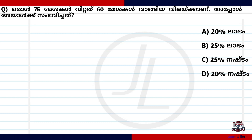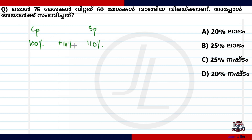Profit and Loss is a special type of topic. We covered the details of Profit and Loss. We will see the shortcuts in the video. Profit and Loss is a basic concept — it involves cost price and selling price. We will see the cost price as 100%.